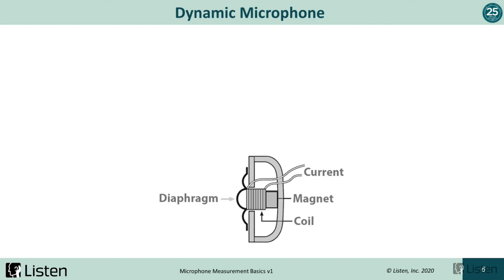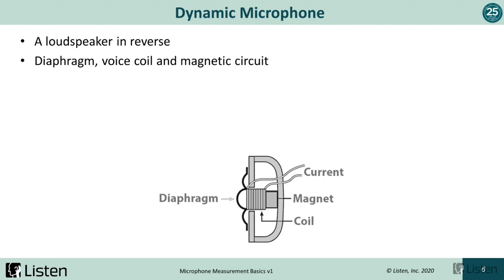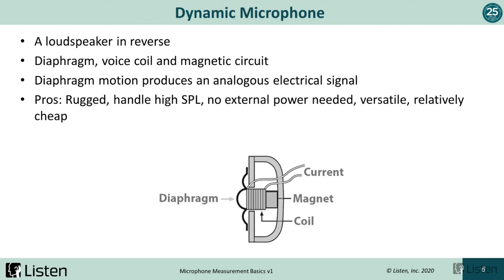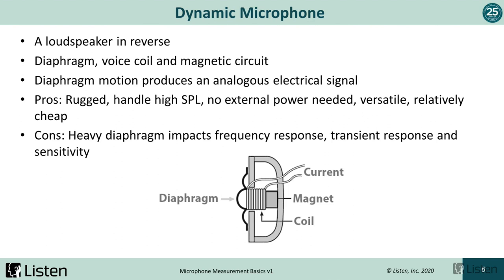Let's move on with a quick discussion of the dynamic microphone. It's essentially a loudspeaker in reverse — it has a diaphragm, a voice coil, and a magnetic circuit, and the diaphragm motion produces an analogous electrical signal. The pros are that it's very rugged, it can handle very high SPL, it doesn't need external power, it's very versatile, and it's relatively cheap. Dynamic microphones are used a lot in live sound applications. The cons are that because the diaphragm is so heavy, it impacts the usable frequency response, the transient response generally isn't that good, and the sensitivity is also generally on the low side.